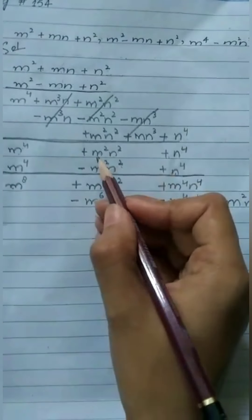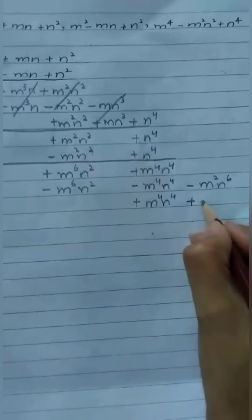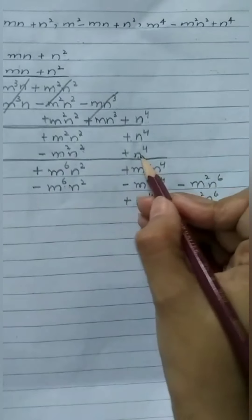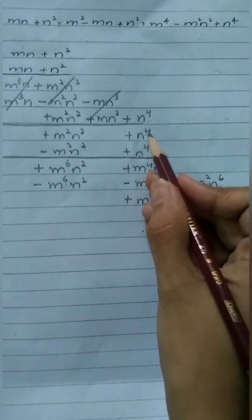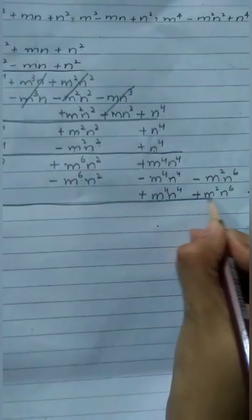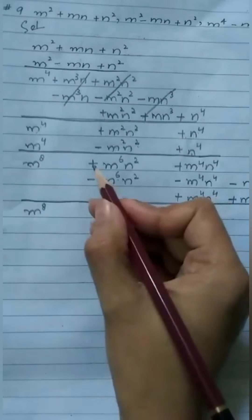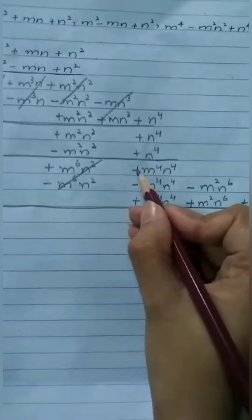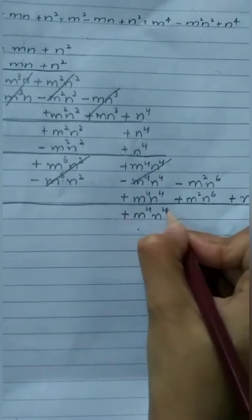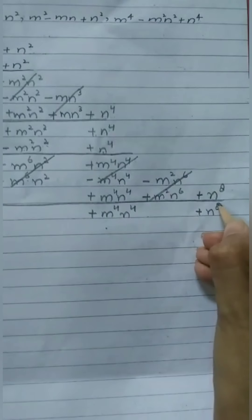n⁴ multiplied by m²n²: 4 plus 2 equals 6, giving m²n⁶. Then n⁴ multiplied by n⁴: 4 plus 4 equals 8, giving n⁸. Now simplifying: m⁸ remains. The plus and minus terms cancel, leaving plus m⁴n⁴. The m²n⁶ and m⁶n² terms cancel. And n⁸ remains. So the final answer is m⁸ + m⁴n⁴ + n⁸.